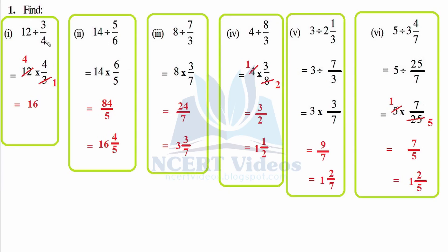So basically what we will do here is flip the fraction, because we have learned in this chapter that division gets changed to multiplication by flipping the subsequent fraction. So here 12 multiplied by — we flip 3/4 to 4/3. Now 3 times 4 is 12, and 4 times 4 is 16, so the whole part is the answer.